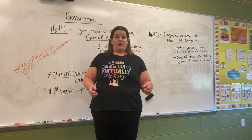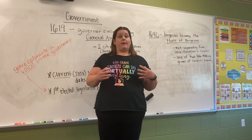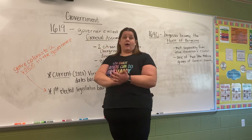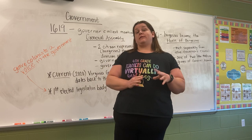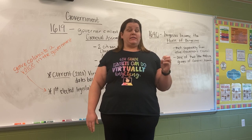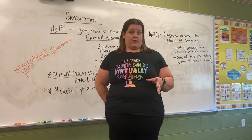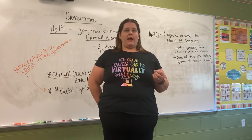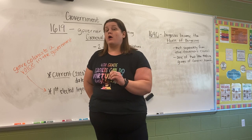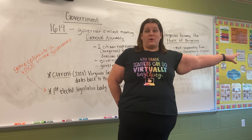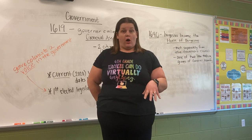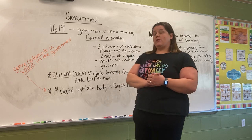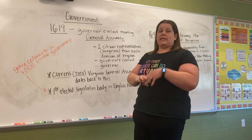The last part of our Jamestown lesson for this week is about the government in Jamestown. Back in 1619, the governor called a meeting of the General Assembly. They came to Jamestown and founded it in 1607, so 1619 is 12 years later. These colonists had started to get their own community going — they were not in England anymore. The king was still in charge, but the king was far away, so they had to handle their own people and called a meeting of the General Assembly.